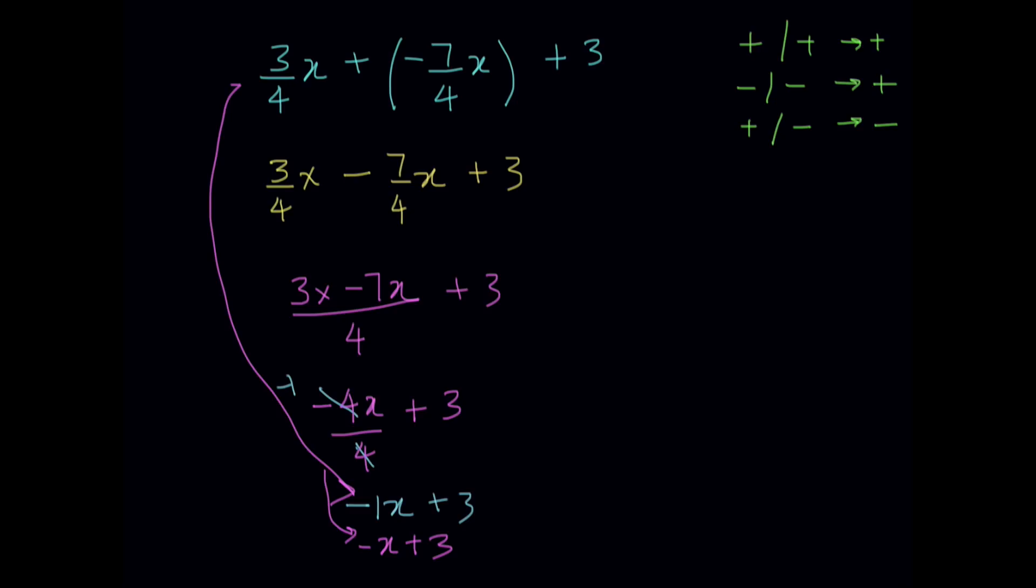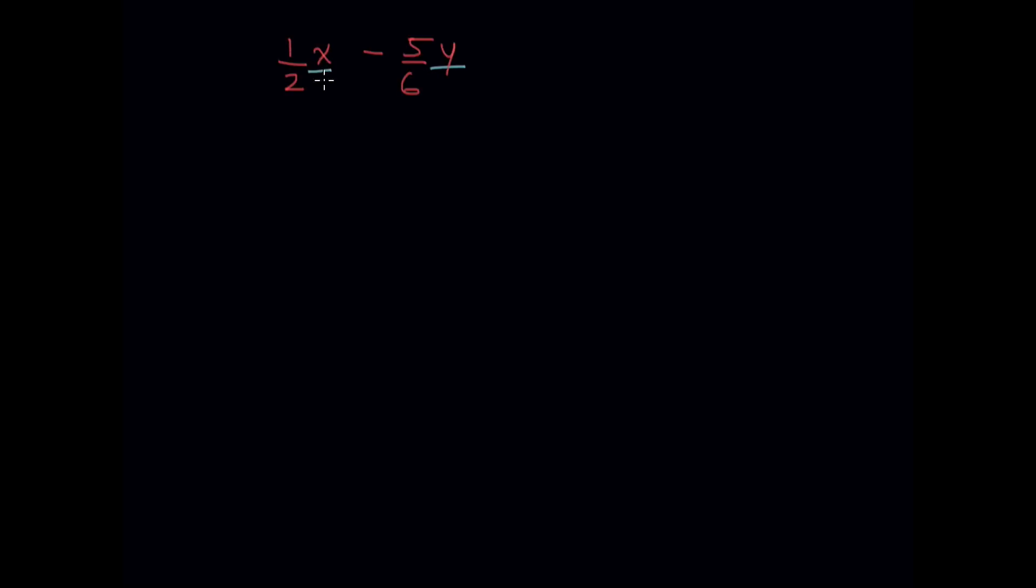So let's look at another example. What if I have something like 1/2x minus 5/6y? The first thing you notice is the variables here are different - one is an x and the other is a y. Remember from the previous example, both of them were x's, which is why we were able to subtract them together. But here, one of them is an x and the other is a y, so what I have to do is I have to take things out in common.